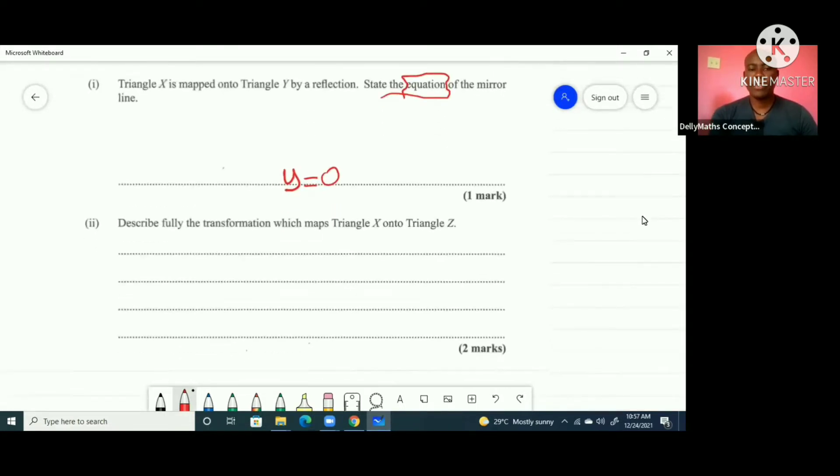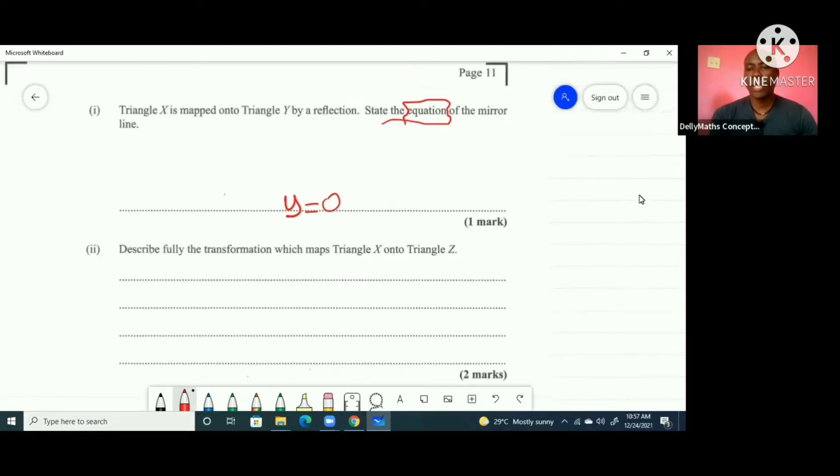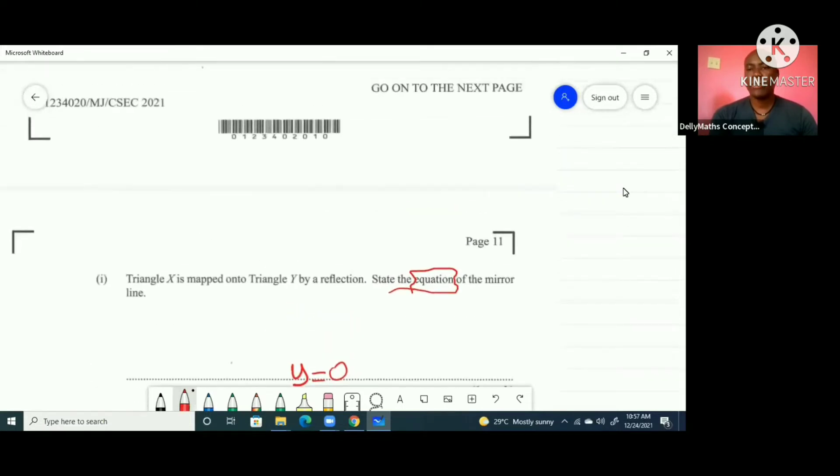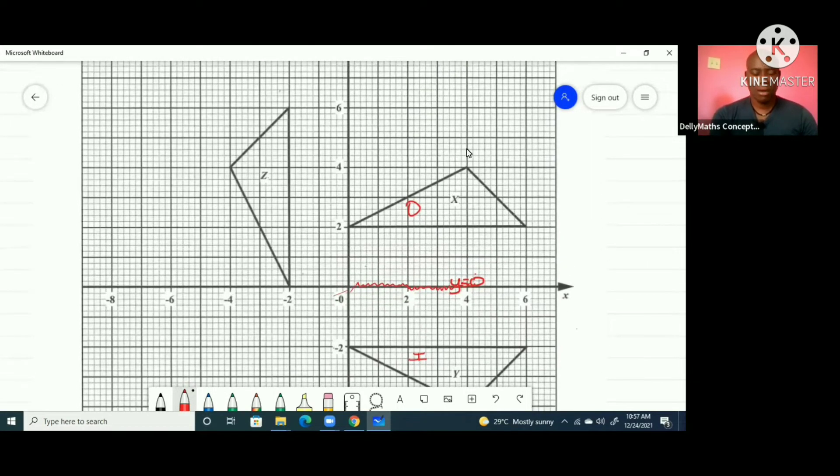Describe fully the transformation which maps triangle X onto triangle Z. We're talking about what changed X to Z, going from X here across to Z here. Definitely we can see the concept of a rotation going on right here. I'm seeing 90 degrees here because this direction is an anti-clockwise rotation, 90 degrees counterclockwise rotation about the origin right here.